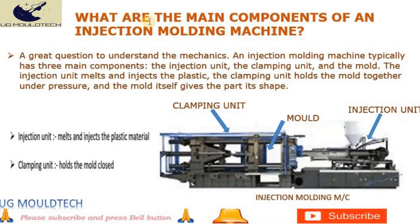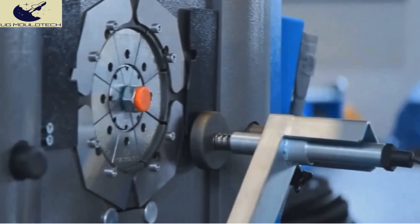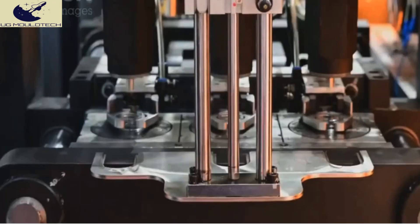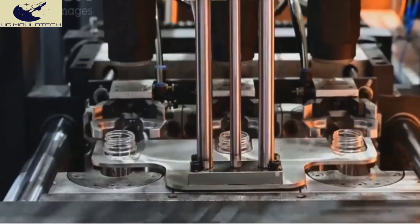Question 3: What are the main components of an injection molding machine? A great question to understand the mechanics. An injection molding machine typically has three main components: the injection unit, the clamping unit, and the mold. The injection unit melts and injects the plastic. The clamping unit holds the mold together under pressure, and the mold itself gives the part its shape.